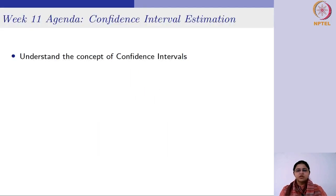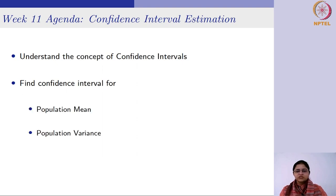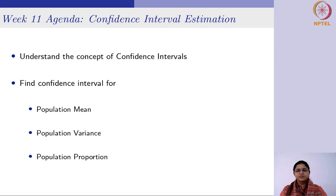So let us see what is the agenda for this week. We are going to understand the concept of confidence intervals first of all, then find confidence intervals for population mean, variance, and proportion. As you can recall, we have been talking about these three from the start of this course - mean and variance as summary measures for numerical variables, and proportion for categorical variables.